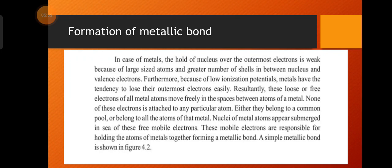Furthermore, because of low ionization potential, metals have a tendency to lose their outermost electrons easily. Metals are electropositive elements and ionize easily, meaning we can easily remove electrons from metal atoms. As a result, the loose or free electrons of all atoms move freely in the spaces between the atoms of the metal.